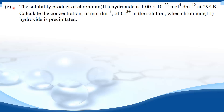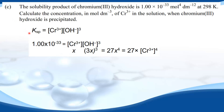Next we will try Part C. The solubility product of chromium hydroxide is 1.00 × 10⁻³³ mol⁴ dm⁻¹² at 298 K. You must specify the temperature because Ksp is temperature dependent. Calculate the concentration in mol dm⁻³ of chromium ions in the solution when chromium hydroxide is precipitated. First we write our expression for the Ksp: Ksp equals the concentration of the chromium ions multiplied by the concentration of the hydroxide ions raised to the power 3.